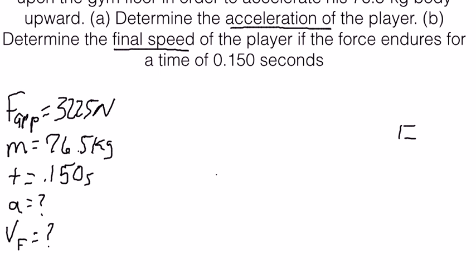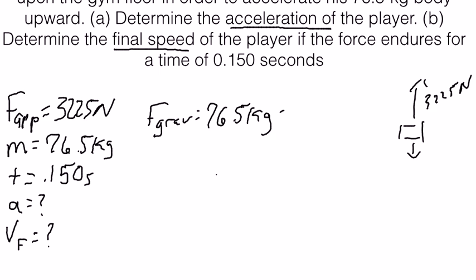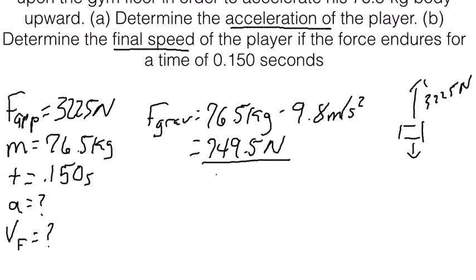We need to draw our force diagram to represent all the forces. He has an upward force of 3,225 newtons. We need to calculate the downward gravitational force. The force of gravity is equal to mass — 76.5 kilograms — times 9.8 meters per second squared, which gives us 749.5 newtons. That is our force of gravity.